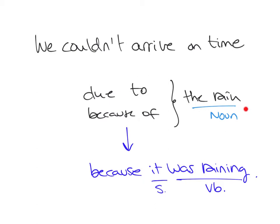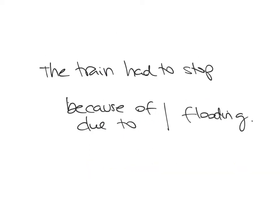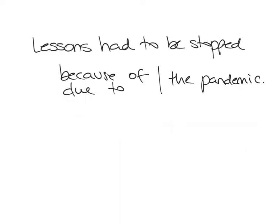If you're going to use just a noun, you would use 'due to' or 'because of,' because 'because of' and 'due to' are prepositions. Sometimes they could use a verb in the -ing form — for example, 'the train had to stop because of flooding' or 'the train had to stop due to flooding.' These are exceptional cases, but it might happen. As you can see, it's just the -ing form — there is no subject.